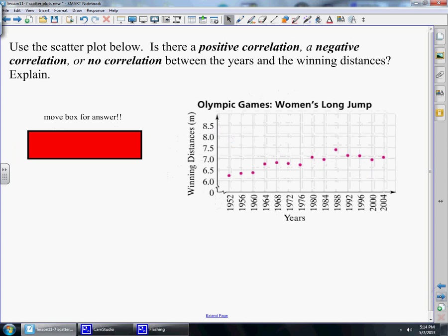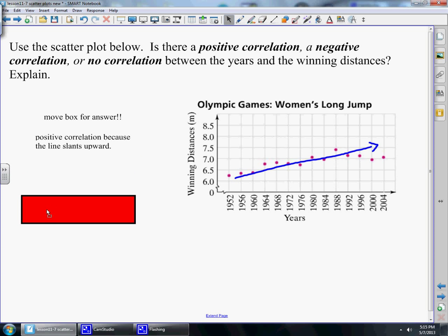Let's look at another example. As we're looking at this scatterplot, this is the Olympic Games women's long jump. As the years go on, what happens to the distances that the women are jumping? If we look, as the years increase, the lengths of their jumps begin to increase as well. So that would be a positive correlation because the line is slanting upward.